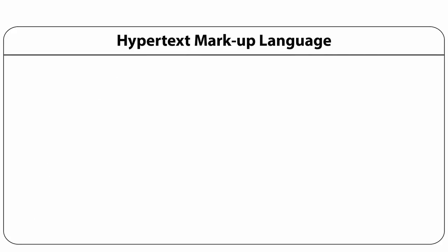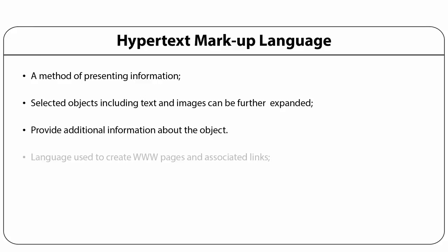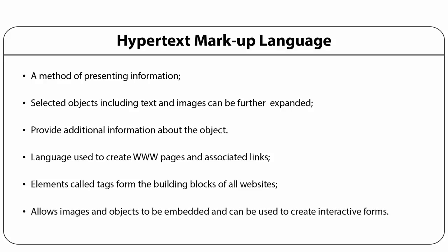Hypertext markup language (HTML) is a method of presenting information where selected objects including text and images can be further expanded to provide additional information about the object. Those objects can be linked to other documents which may be text, file, pictures and video etc. HTML is the language used to create WWW pages and associated links. HTML elements called tags form the building blocks of all websites. HTML allows images and objects to be embedded and can be used to create interactive forms. HTML tags were first published on the internet by Tim Berners-Lee in late 1991.